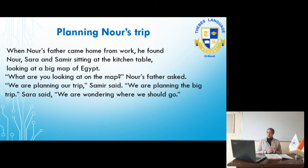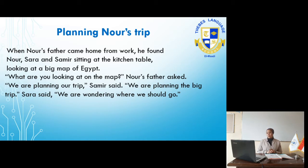We knew that Noor and her family is planning a trip and they are getting very excited to decide where to go. So when Noor's father came home from work, he found Noor, Sara and Samir sitting at the kitchen table, looking at a big map of Egypt. 'What are you looking at on the map?' Noor's father asked.